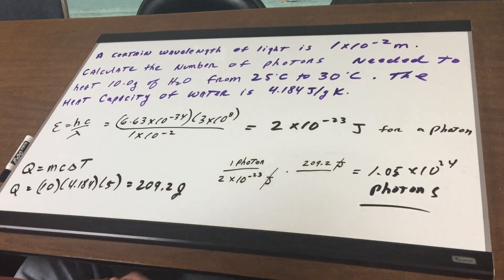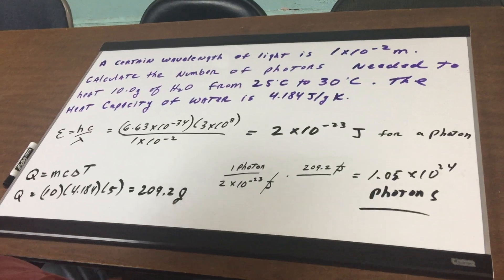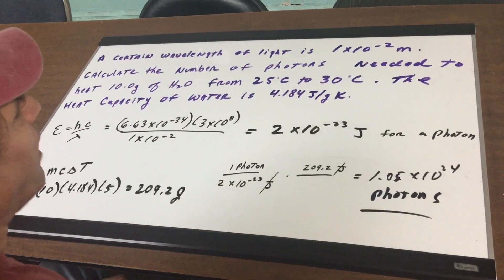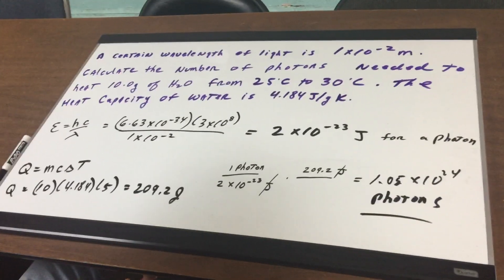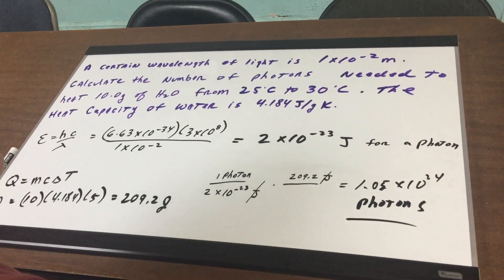A certain wavelength of light is 1 to the minus 2 meters. And what I want to do is calculate the number of photons needed to heat 10 grams of water from 25 to 30 Celsius.